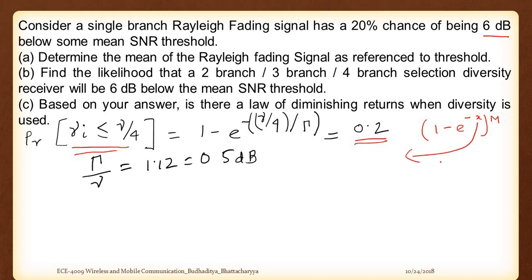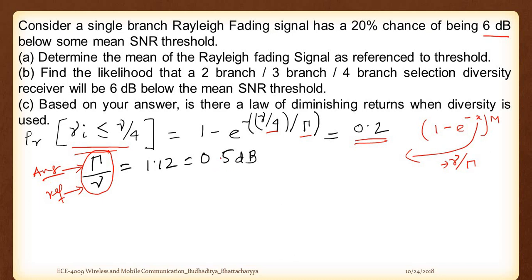The x in this equation is nothing but the threshold divided by the average SNR. Since the threshold in this case was gamma by 4, we are looking at gamma by 4 divided by capital gamma. After calculating everything, taking ln and all those steps, we conclude that with reference to the threshold, the mean SNR comes out to 0.5 dB.